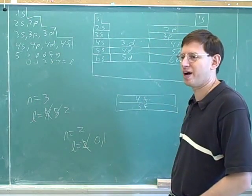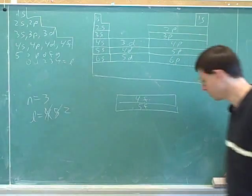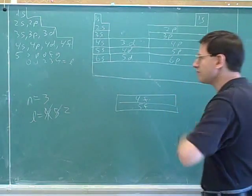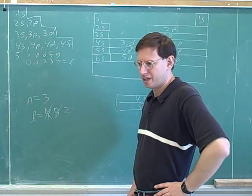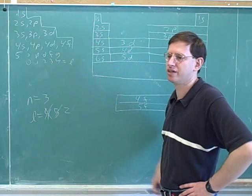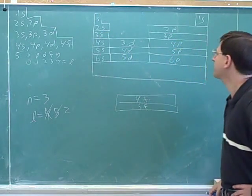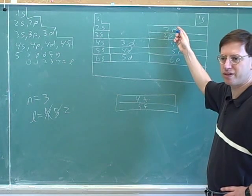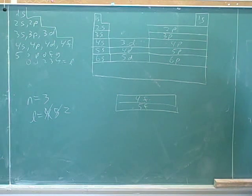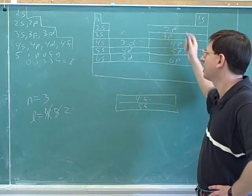Each subshell is split up into orbitals. How many electrons can fit in the 2s subshell? How about the 3s subshell? You can tell because there are two columns on the periodic table. How many electrons can fit into the p subshell? Six — because there are six columns.